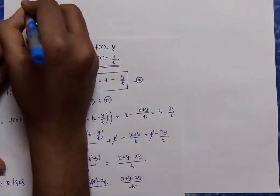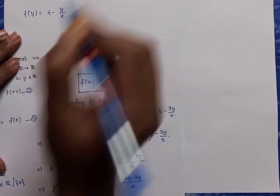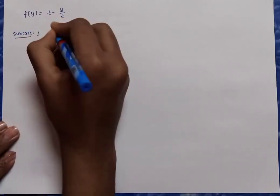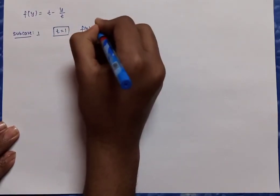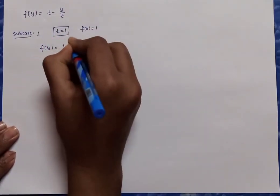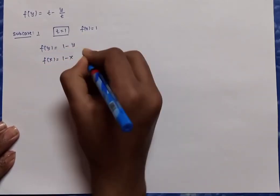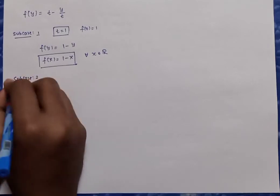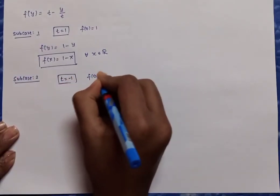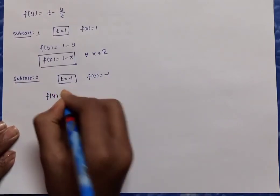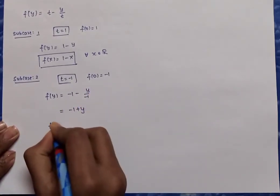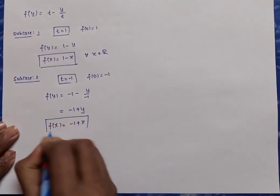Our candidate function is f(y) = (t − y)/t. Subcase 1: t = 1, meaning f(0) = 1. Then f(y) = 1 − y, or equivalently f(x) = 1 − x for all x in R. Subcase 2: t = −1, meaning f(0) = −1. Then f(y) = (−1 − y)/(−1) = −1 + y, so f(x) = x − 1 for all x in R. These are two more solutions.